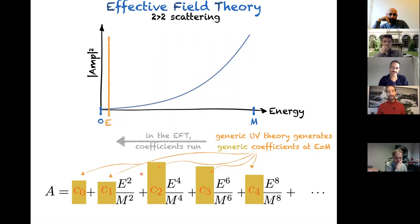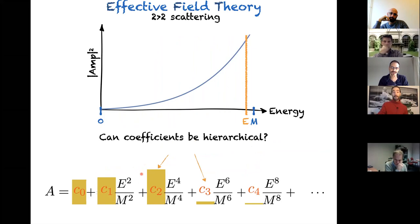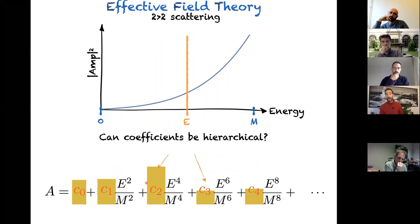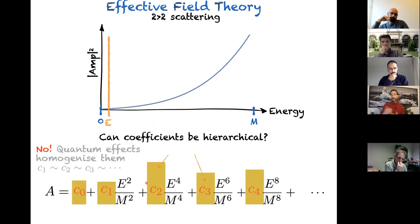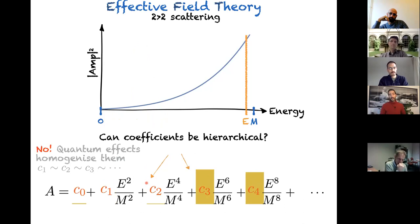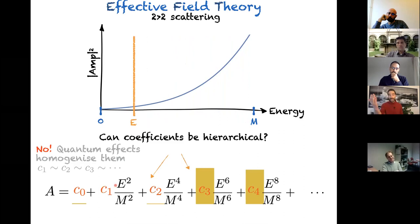This opens the door to asking whether the coefficients can be hierarchical. We all know that if you start with a certain hierarchy in the UV, infrared running will compromise it — coefficients that started at zero will be generated. The general attitude is that quantum field theory homogenizes coefficients; you should think of EFT coefficients as all being of the same order. However, there are certain patterns of Wilson coefficients where only coefficients at higher powers of energy are large while others are small, and the infrared running has very little impact on this hierarchical structure.